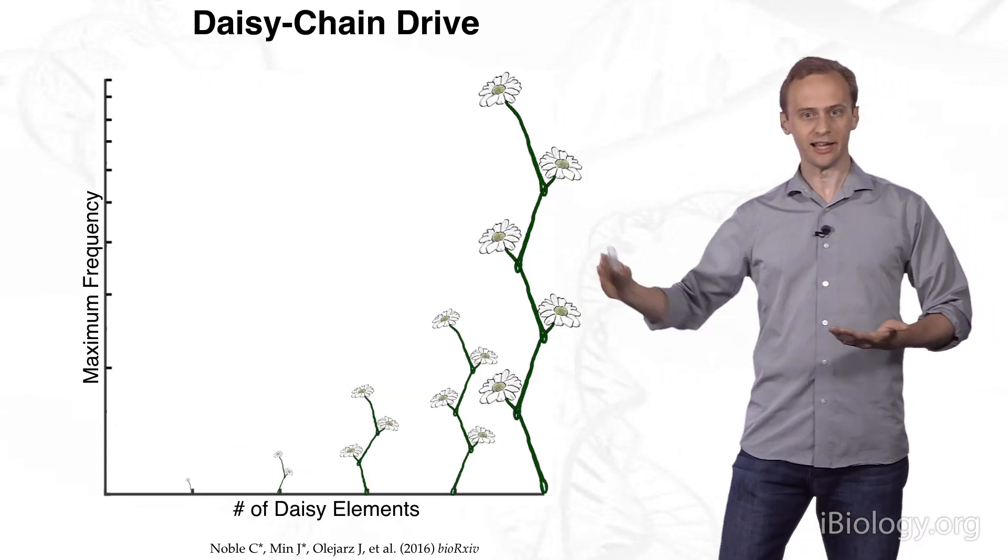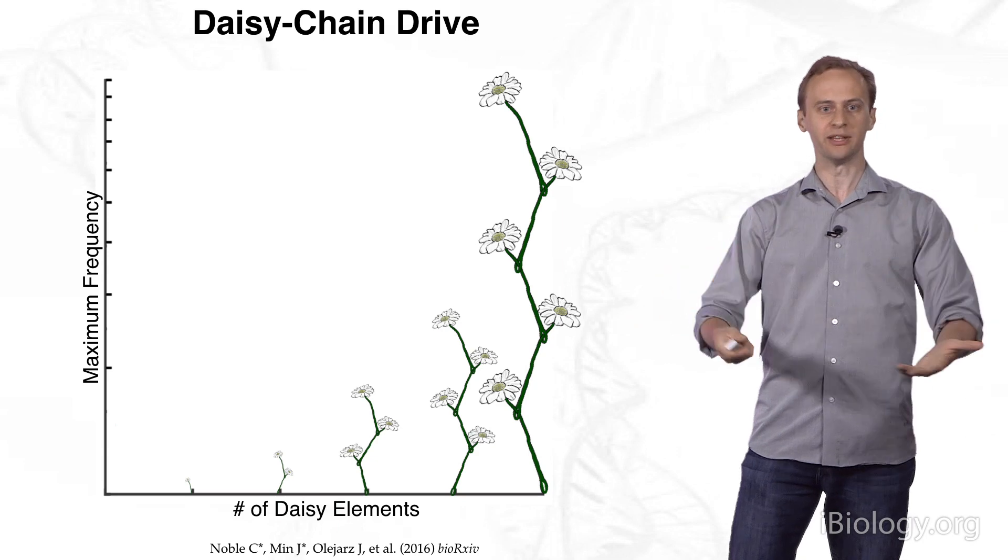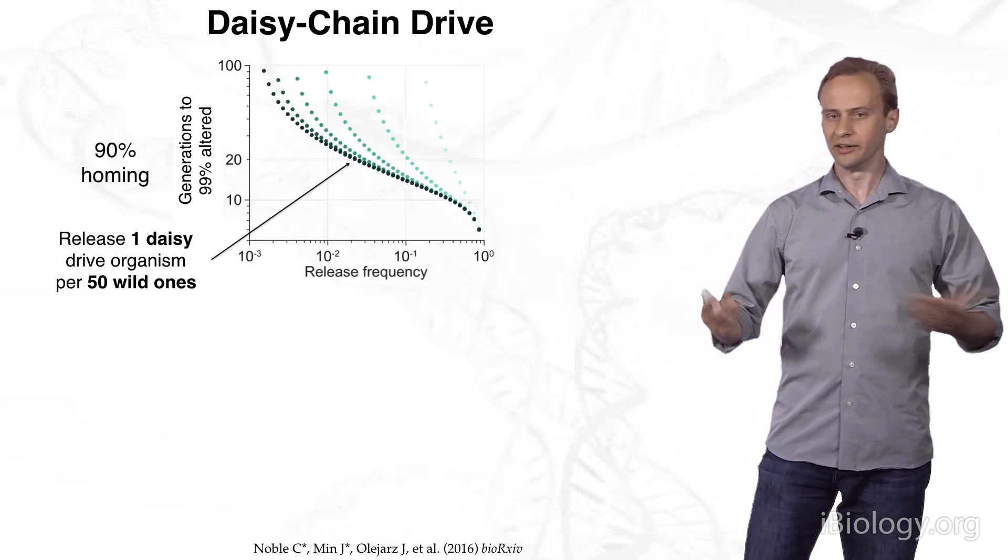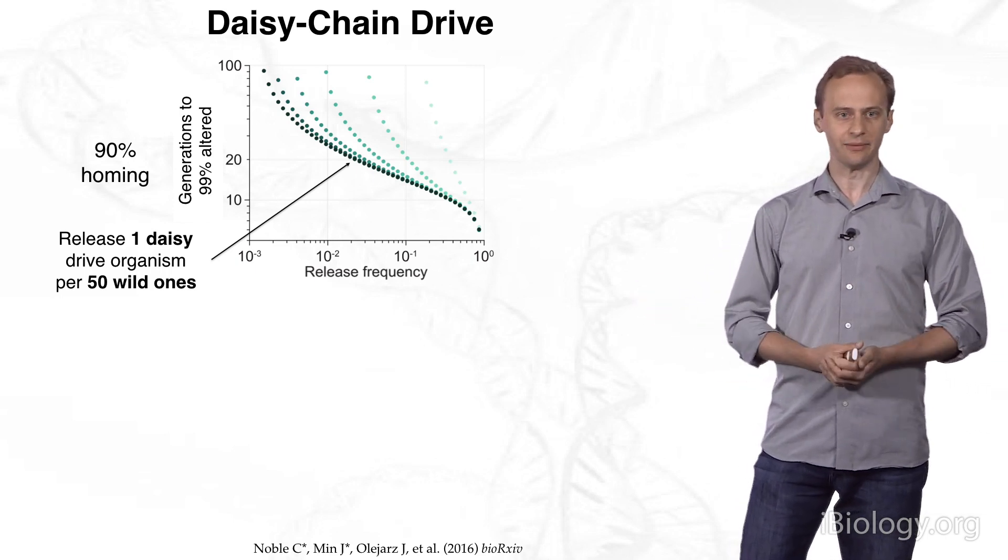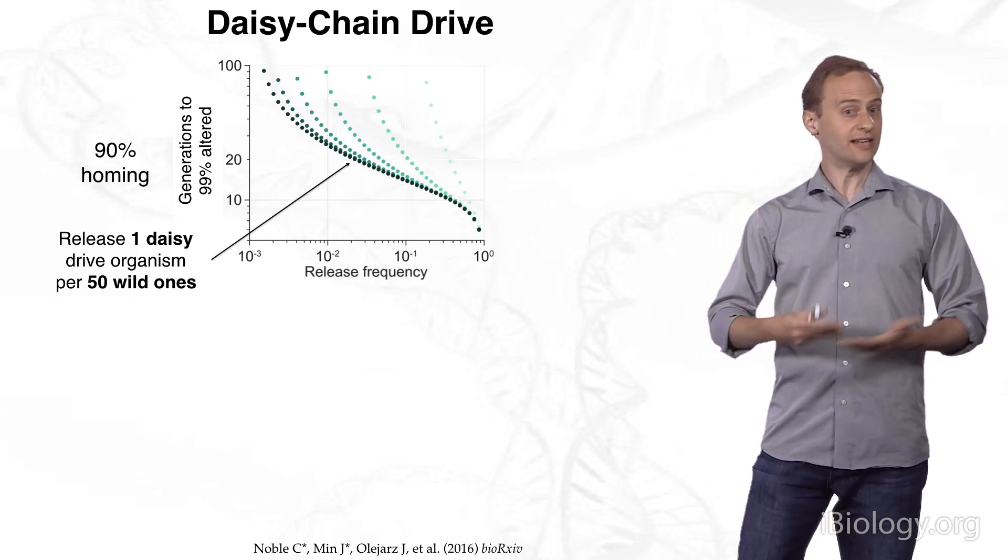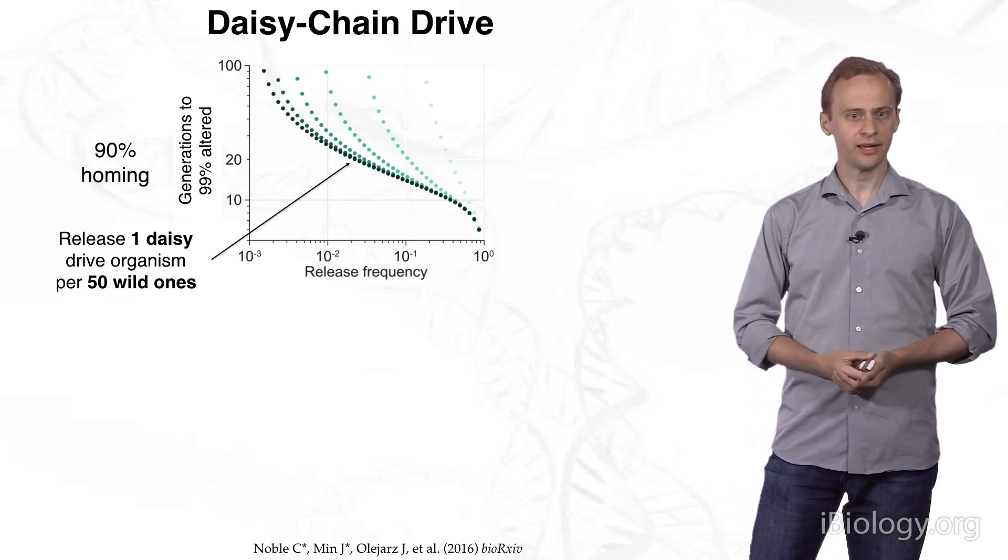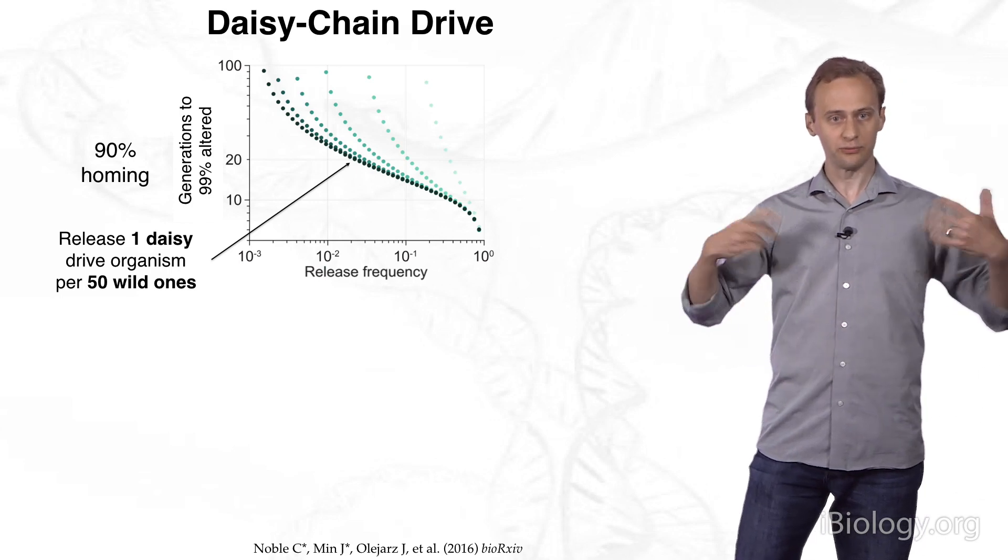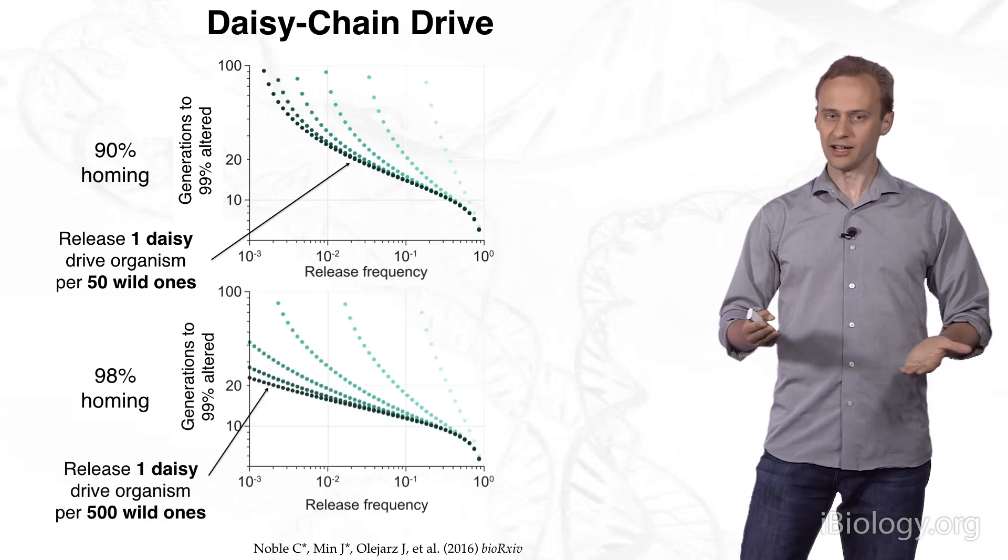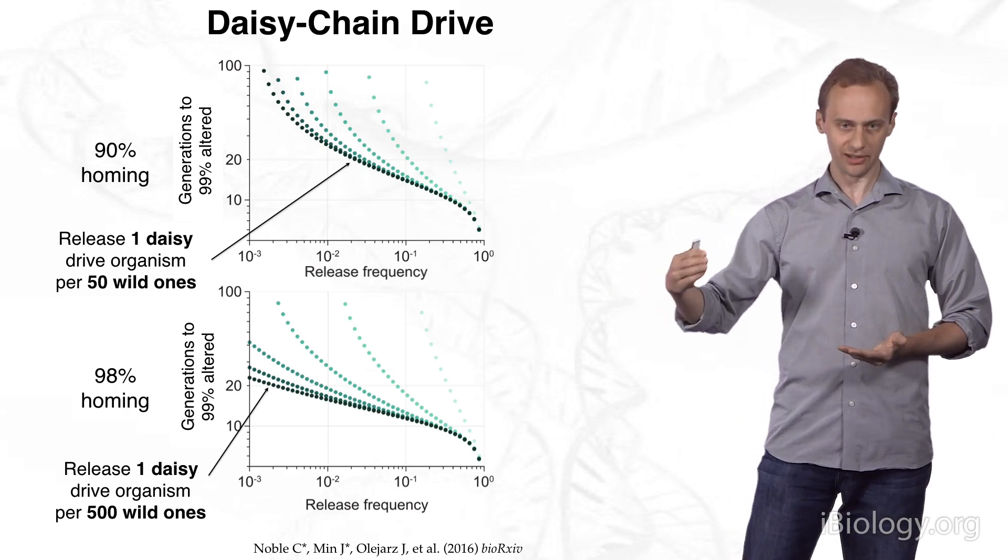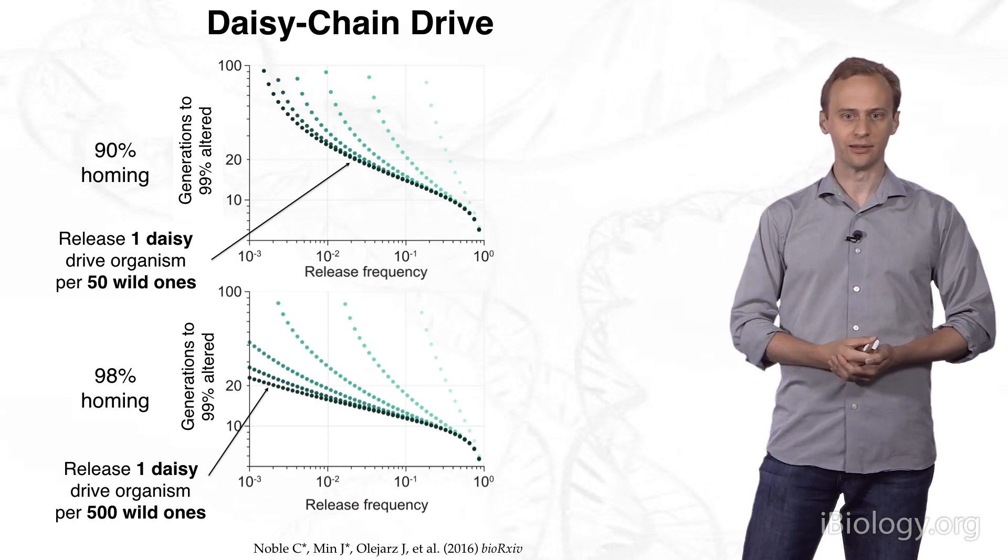Of course, this implies that the more DAISY elements you have in the chain, the more powerful the drive system, the greater the frequency it will reach in the population for a given release of organisms. It depends on how efficient the copying is. DAISY drives work by the same CRISPR-based copying mechanism. If the copying rate is 90% and you want to alter most organisms in a population within 20 generations, then you would need to release one DAISY drive organism per 50 wild organisms in that population. But if your copying efficiency is 98%, as has been seen in some malarial mosquitoes, then you only need to release one DAISY drive organism per 500 wild ones. This is very efficient.